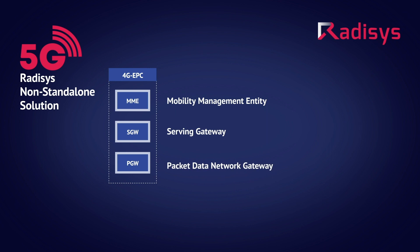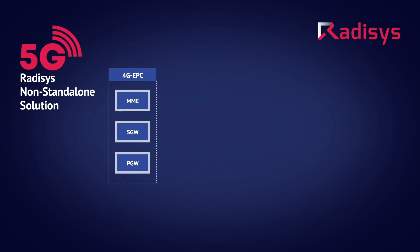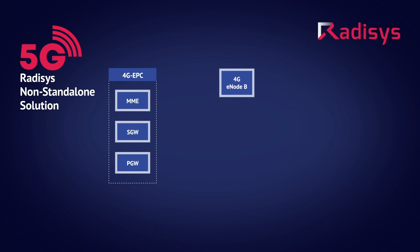The non-standalone radio access network consists of 4G and 5G nodes. The Radisys 4G E-node B acts as a master node, holding the responsibility of anchoring the end-to-end signaling and data messages in the system. The Radisys 5G next-generation node B is disaggregated into two software modules: a gNode B CU, a centralized unit, and a gNode B DU, a distributed unit.